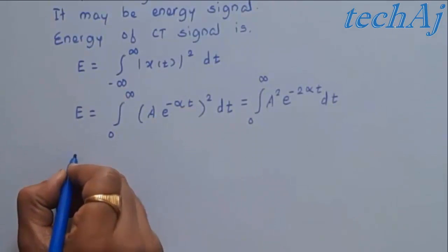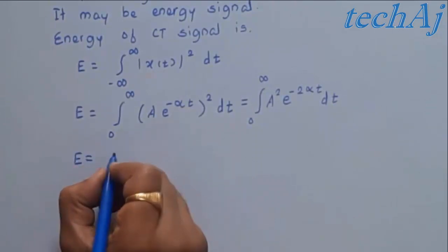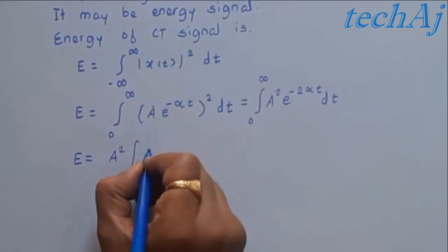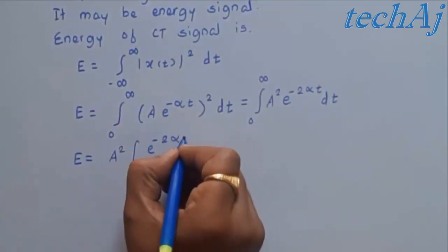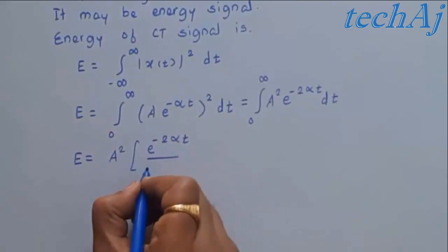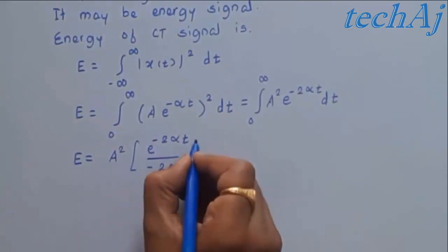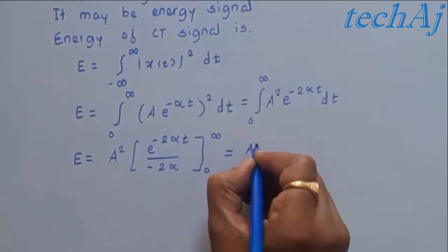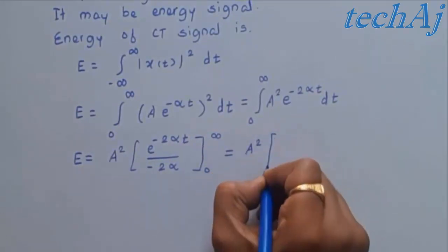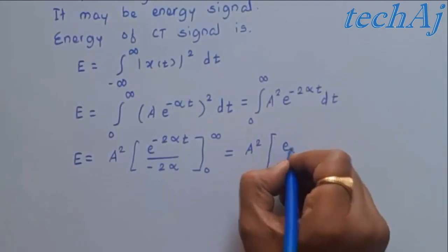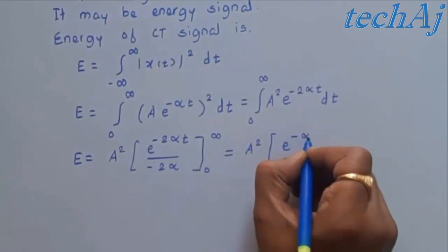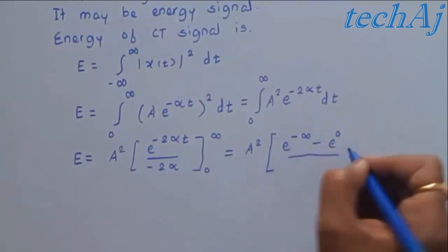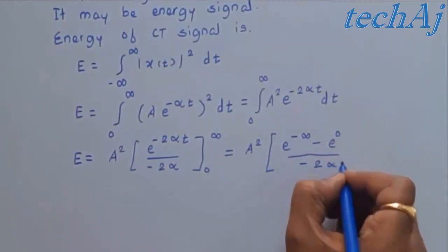A² is a constant over the integration, so we can take it outside the integral. Integrating e^(-2αt) gives e^(-2αt) divided by (-2α), evaluated over the limits 0 to infinity. Putting in the limits, we get e^(-∞) as the upper limit minus e^(0) as the lower limit, all divided by -2α.